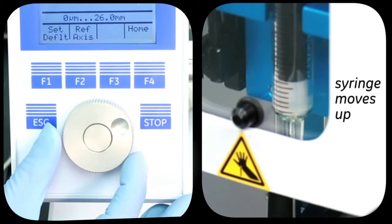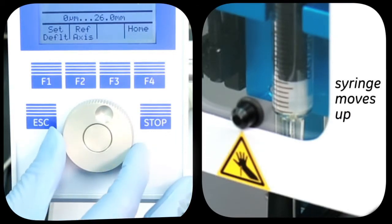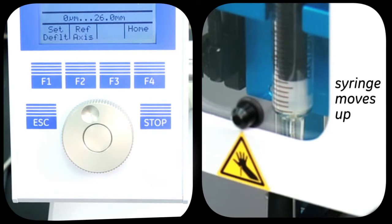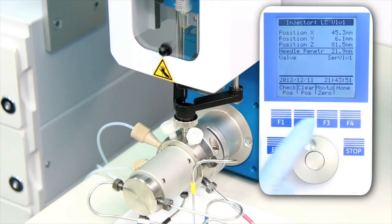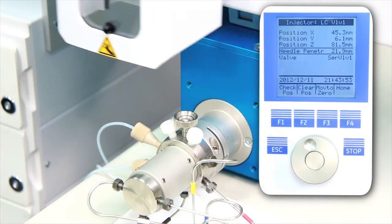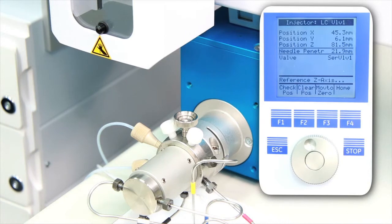At this point, rotate the outer knob two steps in the opposite direction. Then press Enter to save the needle penetration depth value. Press F3, move to zero, and that step is complete.